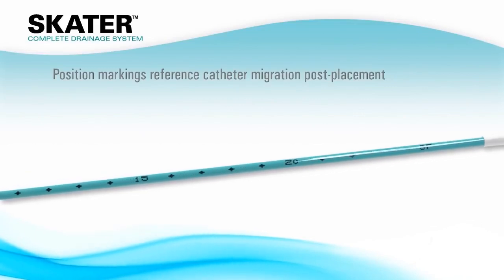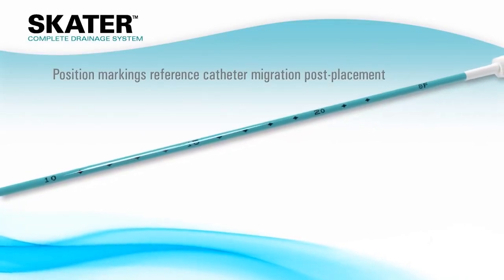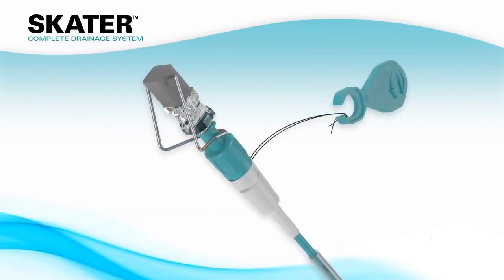The SCATER drainage catheters also include position markings that can be used to reference catheter migration post-placement.